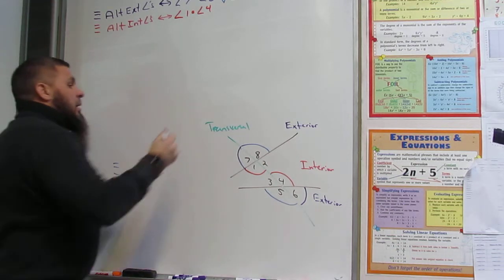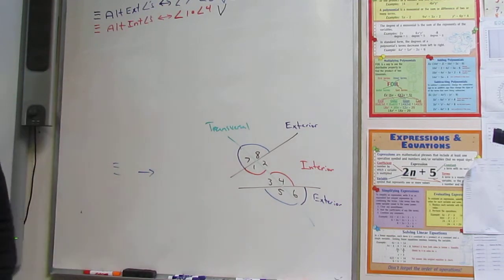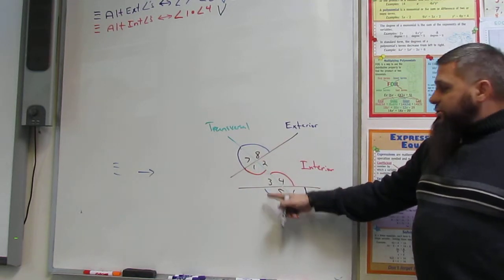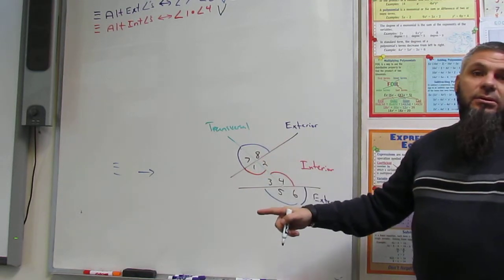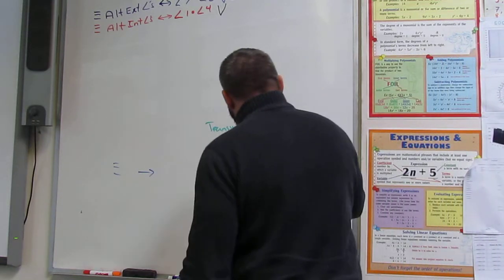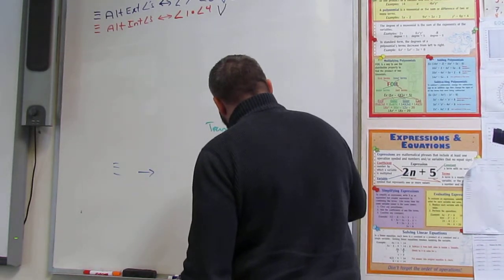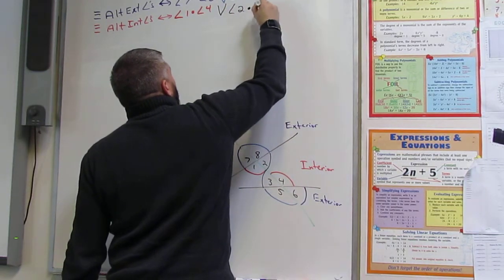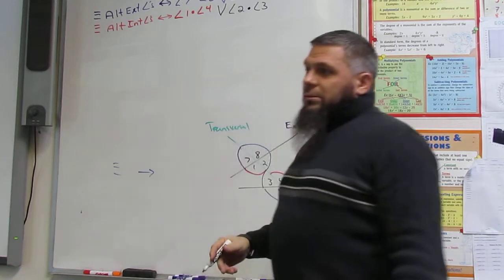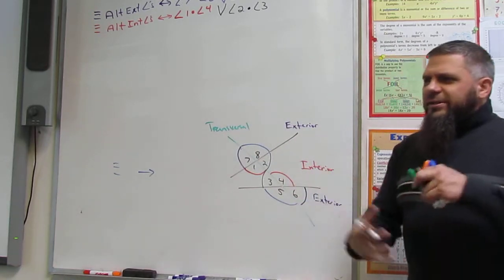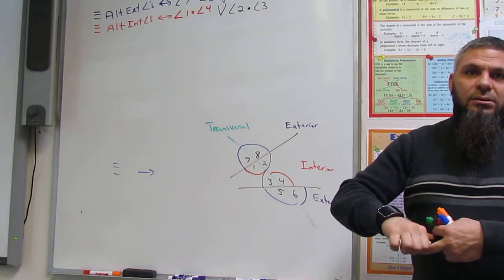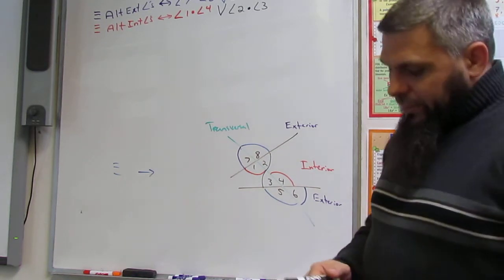Is there another one? Not eight and five — that's exterior. Two and three. Good. Angle two and angle three — notice they're inside. Is this making sense? So far, so good? There's a lot more coming.